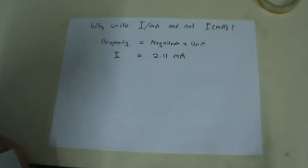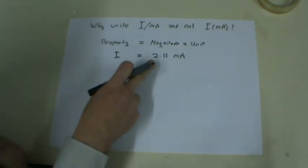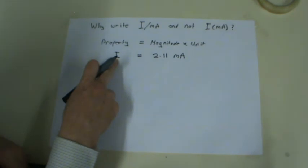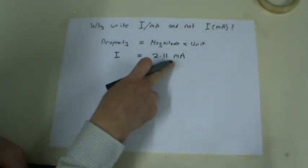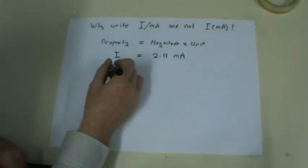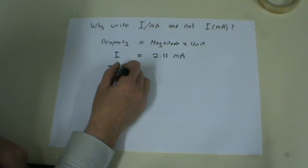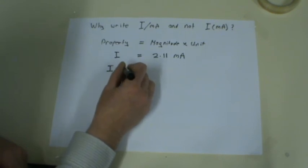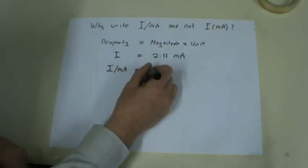So, the way that we get around this is to say, well, hang on, what we've done, we've said I is equal to 2.11 multiplied by milliamps. If we divide both sides by milliamps, we'll find on the left-hand side, I in milliamps is equal to 2.11.